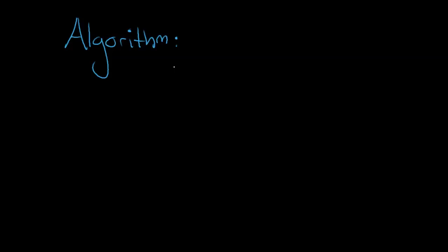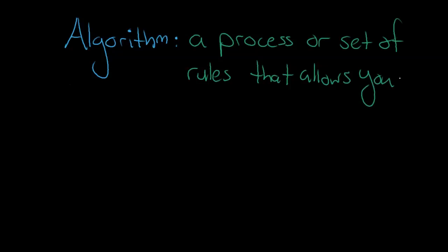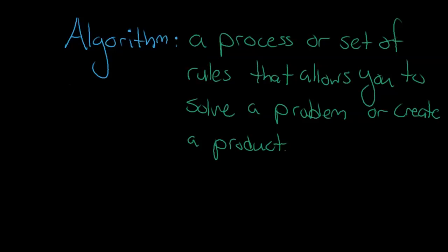In a more general sense though, an algorithm is really just going to be a process or set of rules that allows you to solve a problem or create a product. And by product, I don't mean necessarily something you buy at the store, I just mean any sort of physical or digital outcome. That doesn't mean if you create something you're using an algorithm, but if you do create something you may have used an algorithm to get to that point.